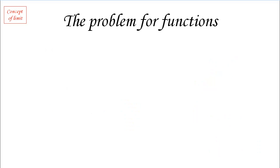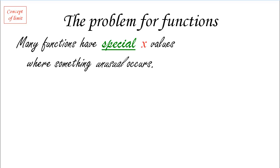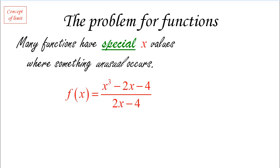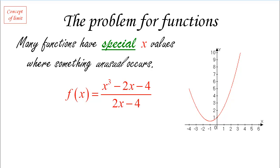The problem related to limits can be phrased in terms of just functions. Many functions have special x-values where something unusual happens. For instance, consider the function (x³ − 2x − 4) / (2x − 4). If you put that function in your graphing calculator, you get a very nice graph — but notice what happens when x equals 2: the denominator becomes 0, and we cannot divide by 0. If you look carefully at the graph, you'll notice a little gap, a hole. That is exactly what we want to find out.